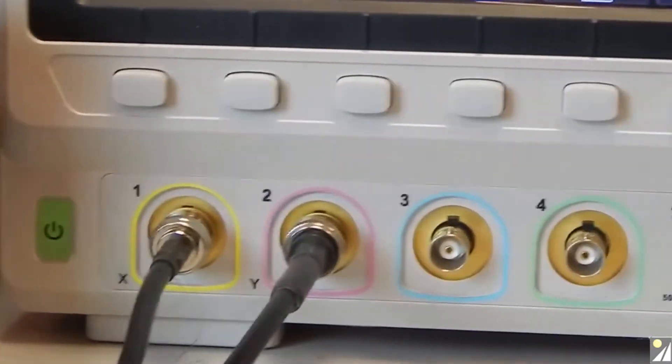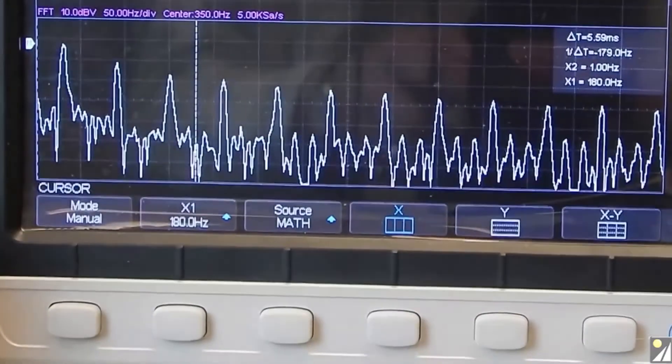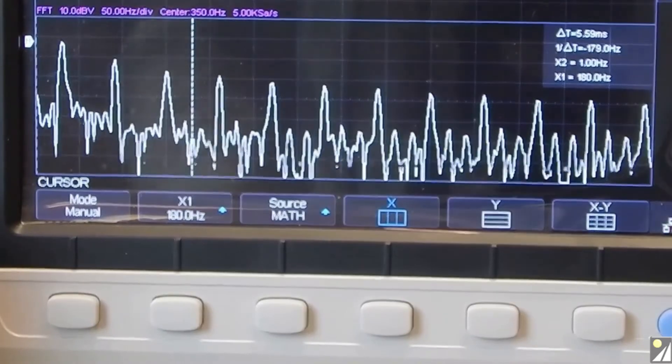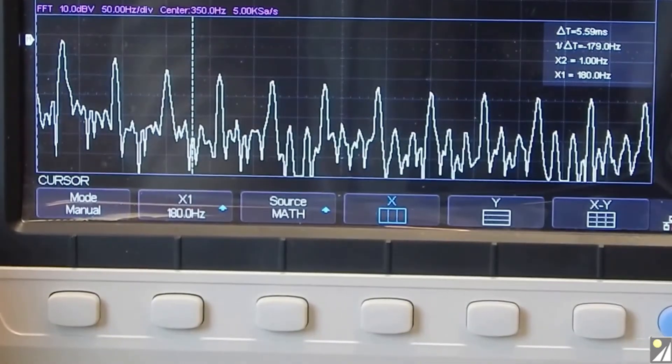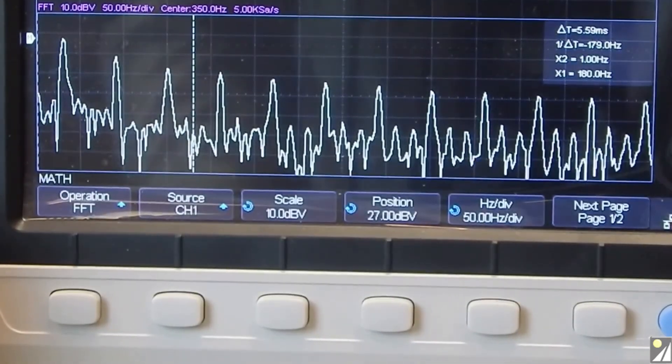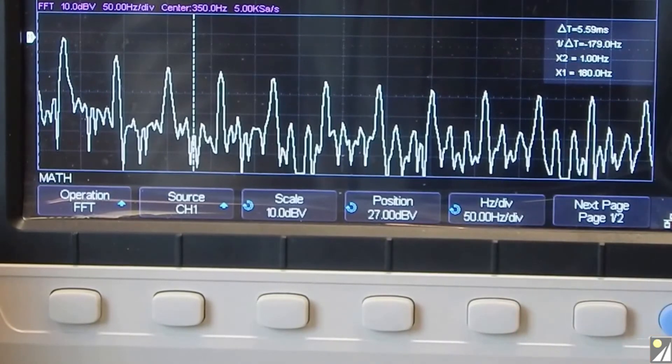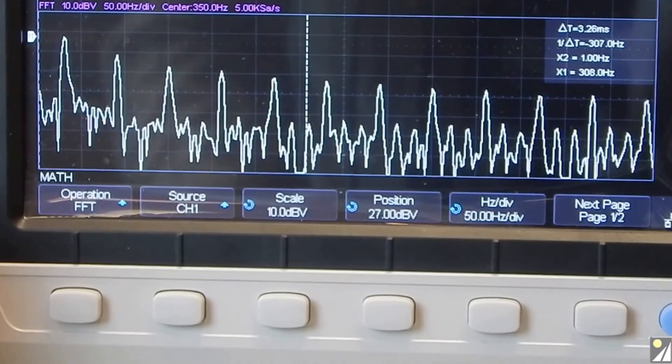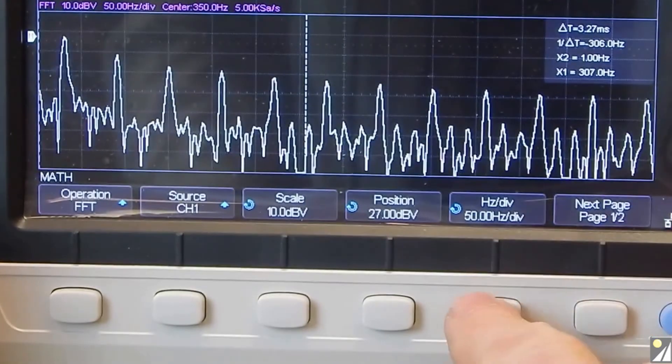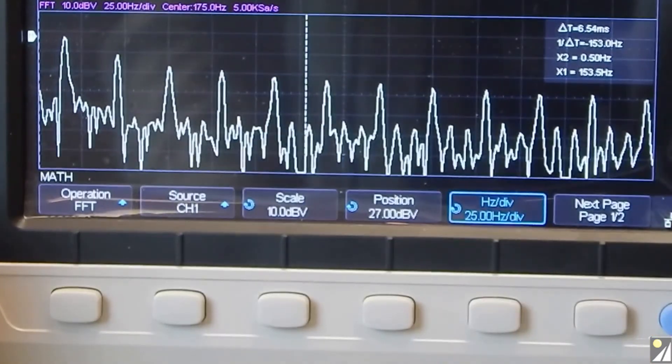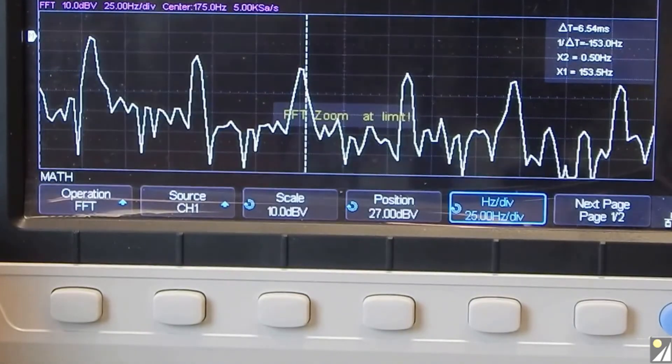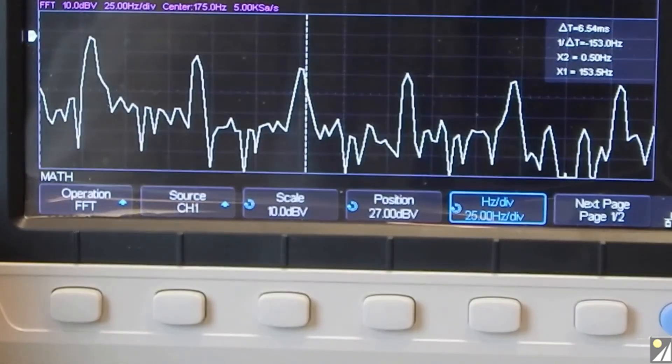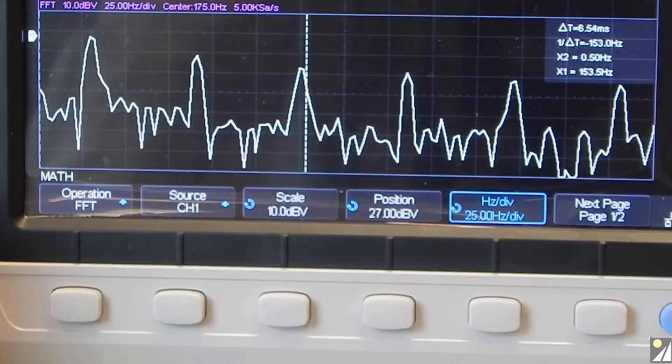And we still get good resolution there on the screen. That is on the 50 hertz per division. Again, we can improve that by choosing the right control down to 25 hertz per division. So there you can see the 30 hertz signal, we've got excellent resolution.